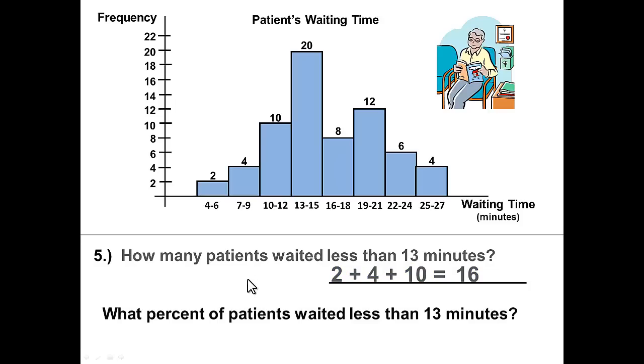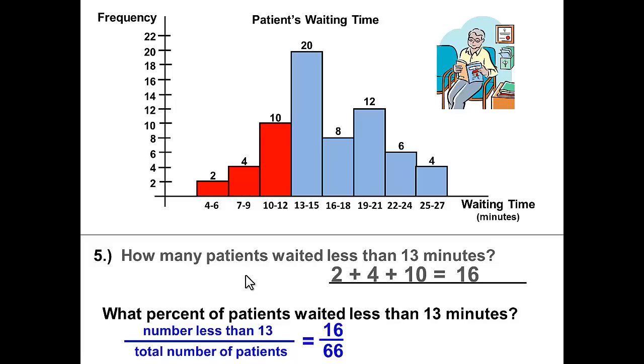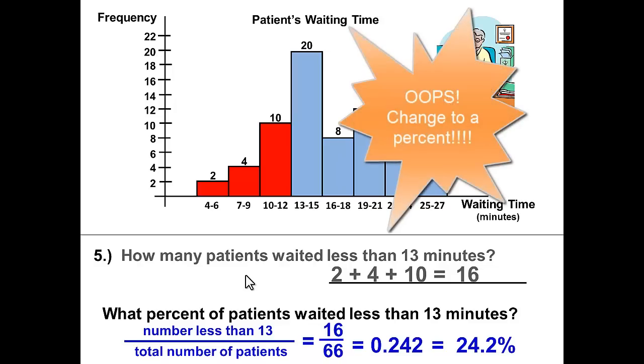And then for the percent of patients who waited less than 13 minutes, we'll take the number less than 13 divided by the total number of patients, 16 divided by 66. That will give us .242. Change to a decimal gives us 24.2%.